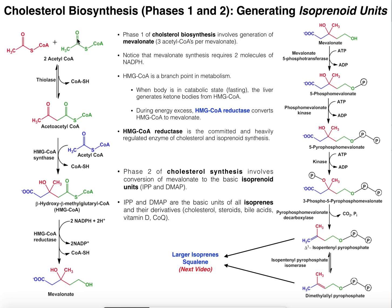The first step in isoprene synthesis is we have to take two molecules of acetyl-CoA and condense them. This is a reaction we've seen before in beta oxidation and ketone body metabolism. It converts these into a condensed molecule, acetoacetyl-CoA. Then we have the enzyme HMG-CoA synthase, which takes a third molecule of acetyl-CoA and condenses it with acetoacetyl-CoA, giving us beta-hydroxy-beta-methylglutaryl-CoA, but most people just call it HMG-CoA.